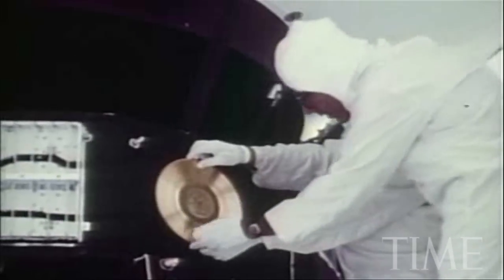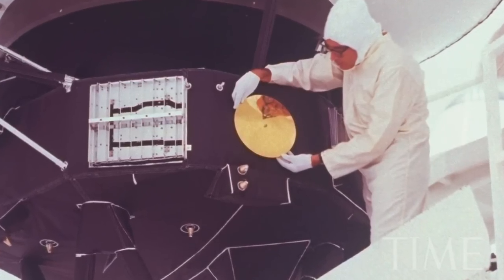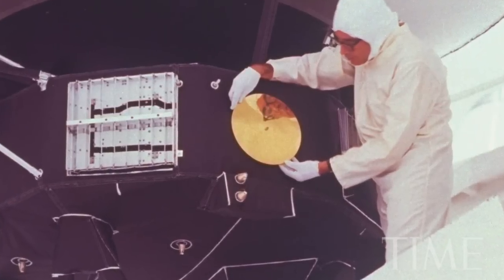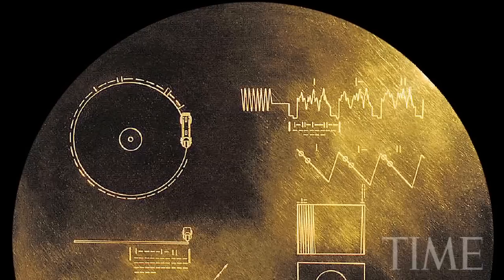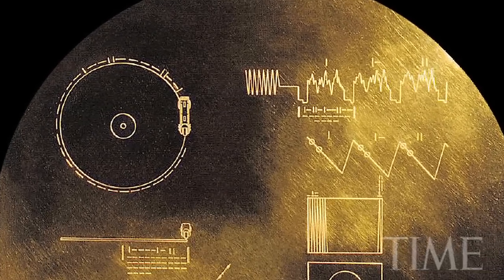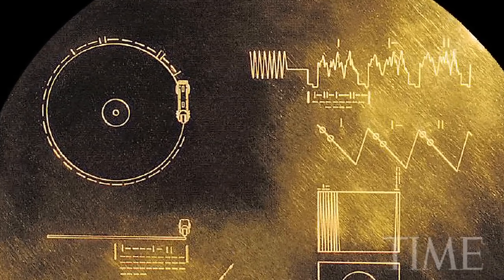Perhaps the most lyrical thing about the Voyagers are their famed golden records. Affixed to the side of both ships are 12-inch gold anodized discs about the same size as an old phonograph album, and they work the same way too.